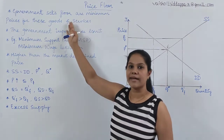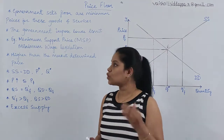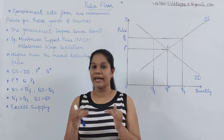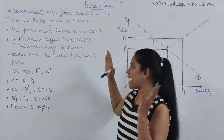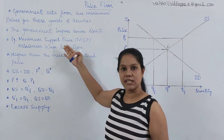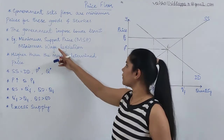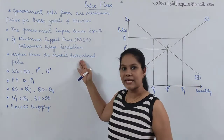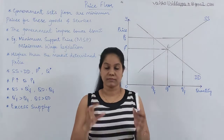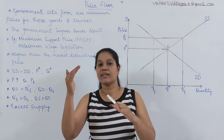This is definitely fixed by the government. The government sets a minimum price for certain goods — the government imposes the lower limit. Price ceiling is the upper limit; price floor is the lower limit. The two example theories I will discuss today are minimum support price and minimum wage legislation. The price what the government is going to fix is higher than the market determined price. If the market price is 40, the government is going to fix 50 rupees — higher than the market determined price.